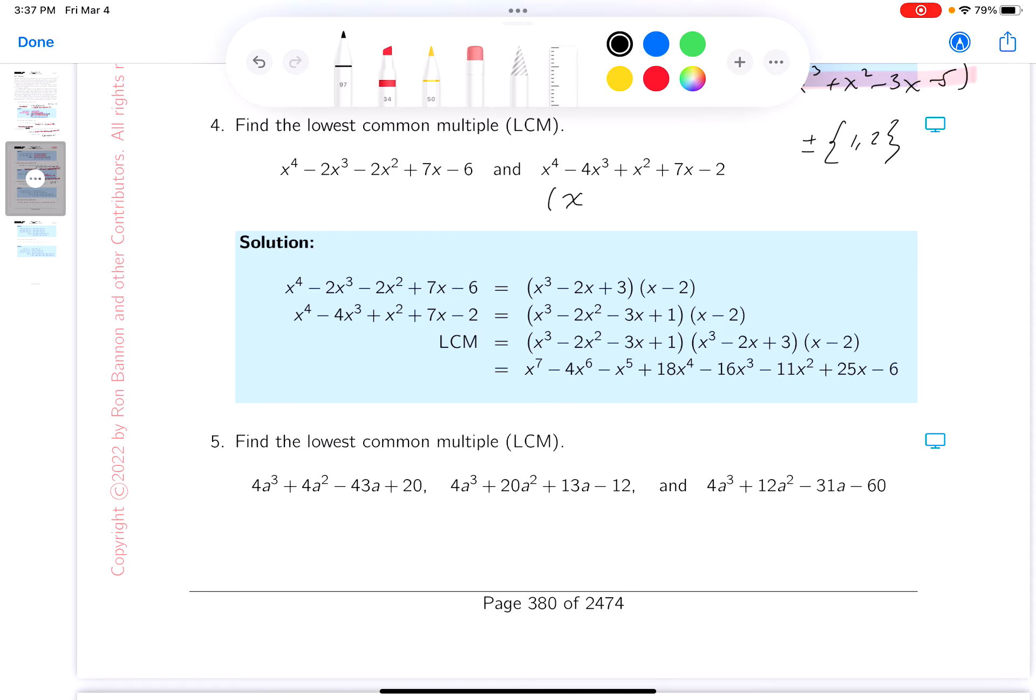Let me write that down for you. So what you get over here is x minus two. Now I'm not going to go through the long division, but you'd have to do a long division. If you do the long division you get x cubed minus 2x squared minus 3x plus one.